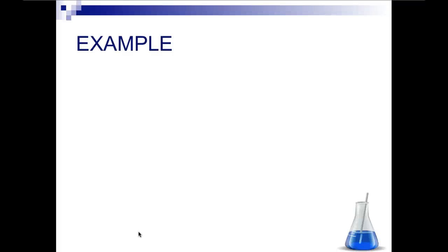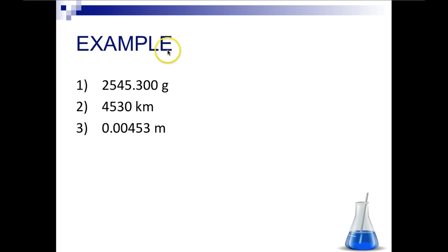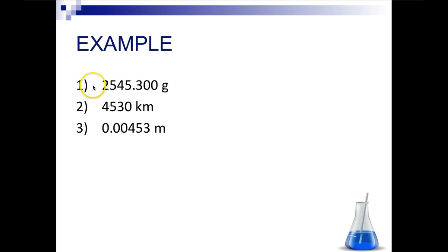The easiest way to do this is with examples. How many significant digits are in this number? We start on the left — and we have a decimal — so since we have a decimal, every number counting to the right is significant: 1, 2, 3, 4, 5, 6, 7. We have 7 significant digits in this number.